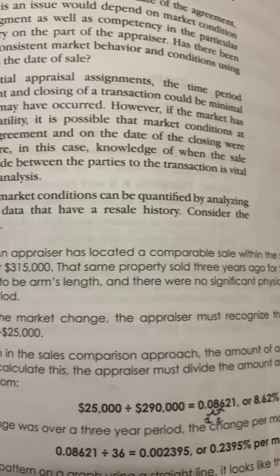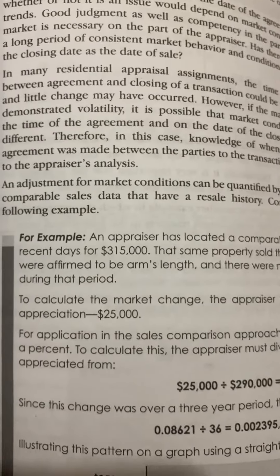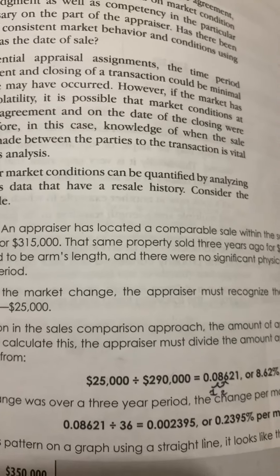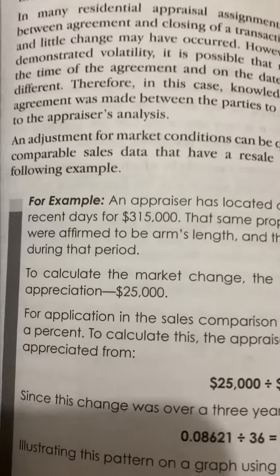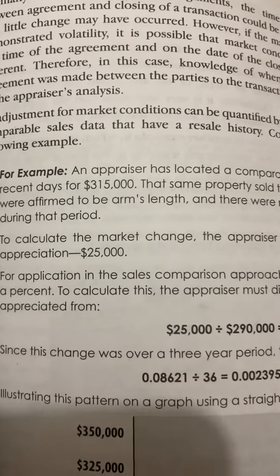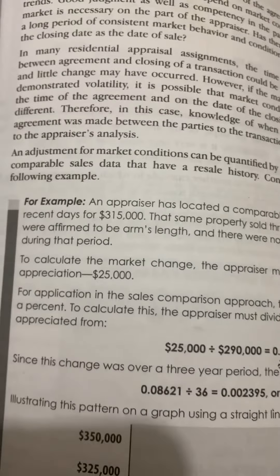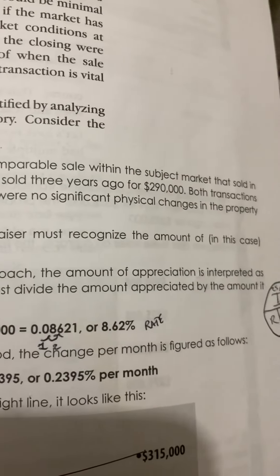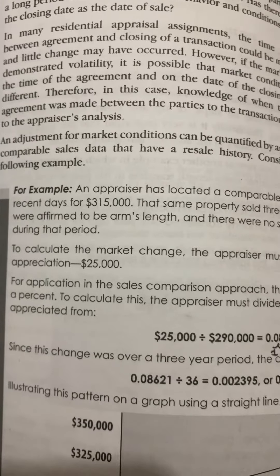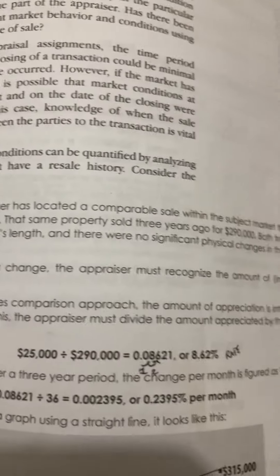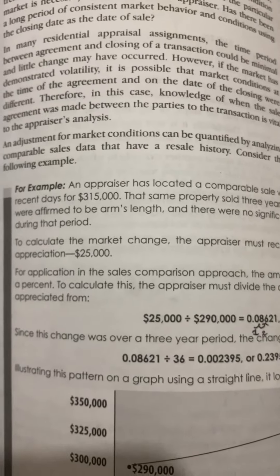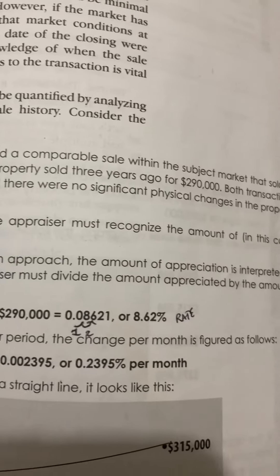An adjustment for market conditions can be quantified by analyzing comparable sales data that have a resale history. Consider the following example: an appraiser has located a comparable sale within the subject market that sold in recent days for $315,000. The same property sold three years ago for $290,000. Both transactions were affirmed to be arm's length and there were no significant physical changes in the property during that period.